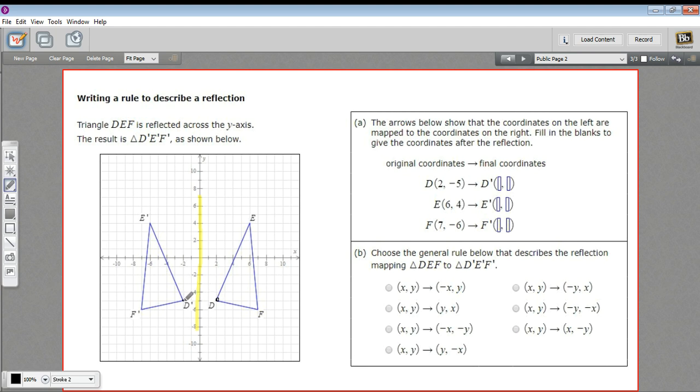What that means in terms of the coordinates, when you're reflecting over the y-axis, is that the x-coordinates just become negative, and the y-coordinates stay the same. So if this is a positive 2, the reflection is going to have a negative 2, whereas the y stays the same. So negative 2, negative 5.